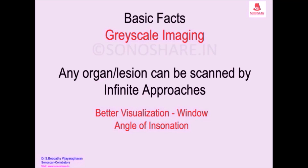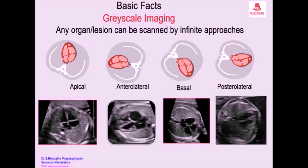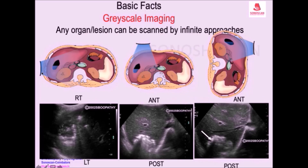The structure will be better visualized because of an acoustic window — avoiding ribs, avoiding gas — or the angle of inclination may be perfect in a particular approach. Theoretically, we cannot take the pancreas from the posterior aspect because of the spine. However, this can be done in a fetus. One application is in fetal echo — do the scan from the right flank.